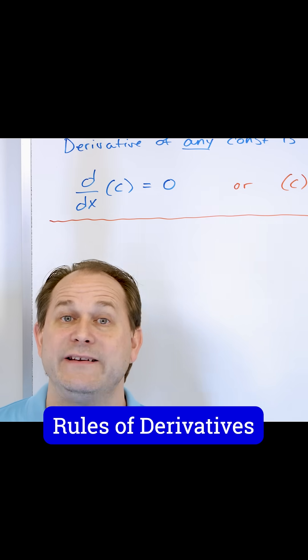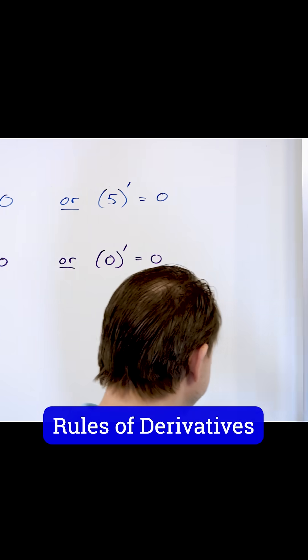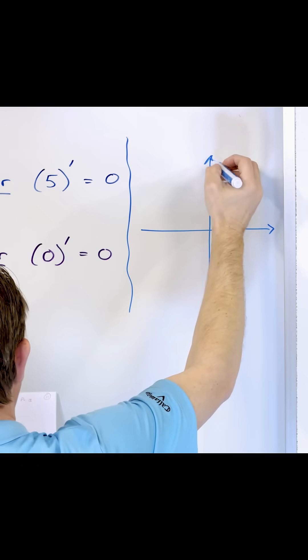The derivative of any constant number at all is always equal to zero. Why is that the case? What does the graph of a constant function look like?